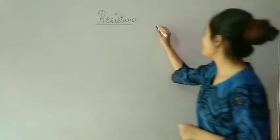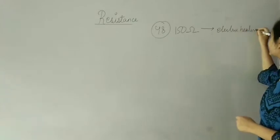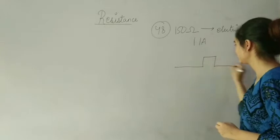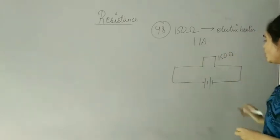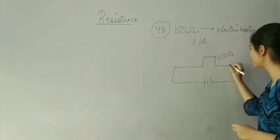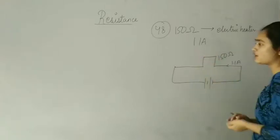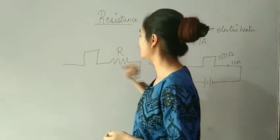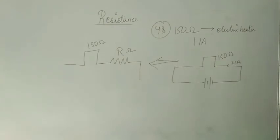A 50 ohm electric heater which can take a maximum 1.1 ampere current. Let's suppose this is a heater, and this is a voltage with a 150 ohm resistor. The current is 1.1 ampere, and a resistance should be joined in series with it.